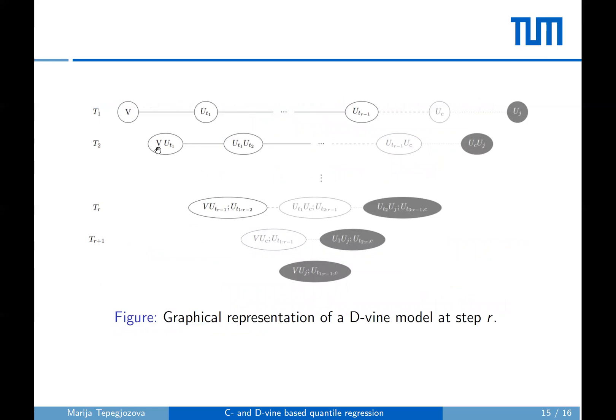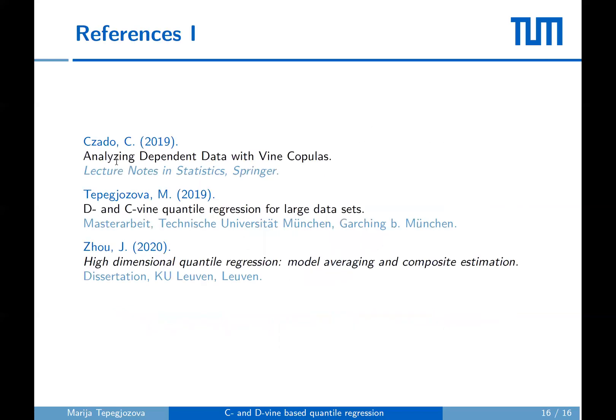Here in the figure, we have a graphical representation of the D-vine model at step R. We remember that the order of a D-vine model is equivalent to the order of the elements in its first tree. In this figure, we can see the optimal current fit, then the extension by the candidate predictor, and finally the extension to the two-step-ahead model. The conditional log likelihood is calculated as the sum of the log likelihoods of the pair copulas involving the response variable. So, thank you for your attention.